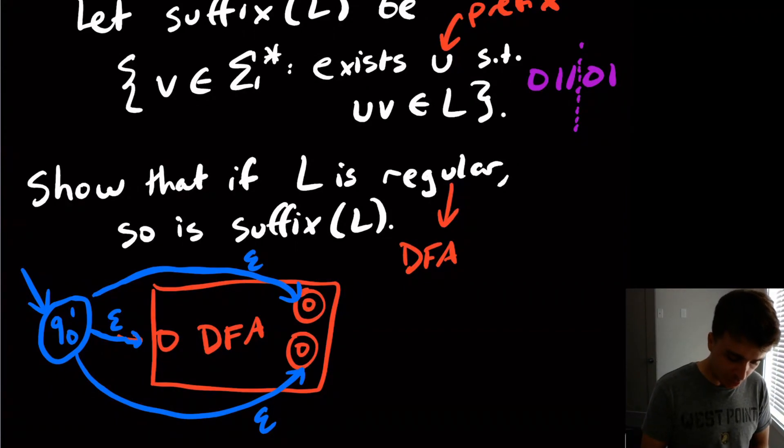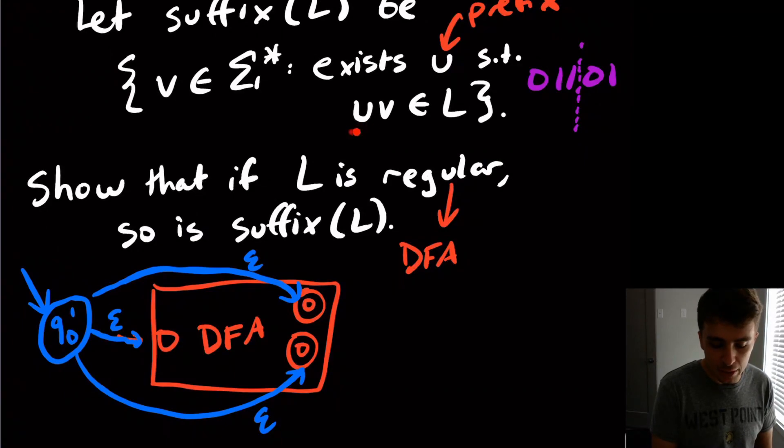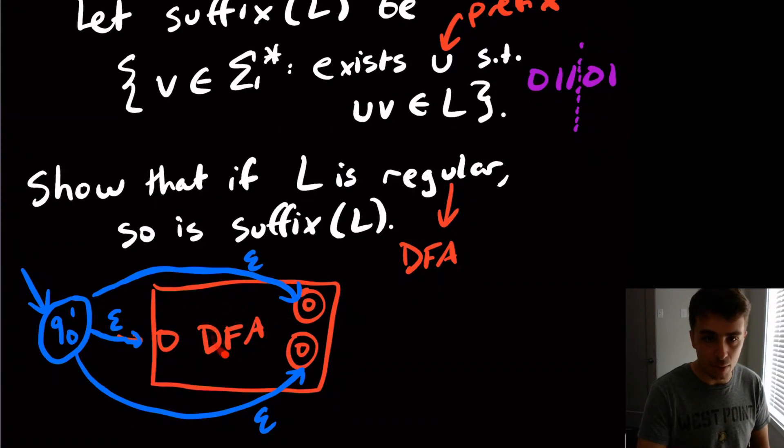Well, consider what happens. If we just took the whole string, well, that's a suffix because I could just have u, the string u being empty. So the whole string works and we can still get that because we can epsilon transition into the original start state. And then we can just read a string that the DFA would have read before.